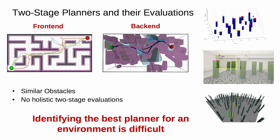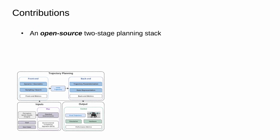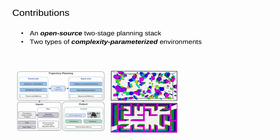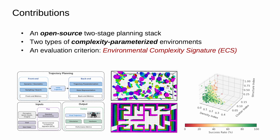To solve these problems, we believe we can evaluate planners separately for different environmental complexities and make planner recommendations accordingly. To this end, we propose an open-source two-stage planning stack to easily integrate new front-end and back-end planners, two new environments to vary environmental complexities, and an evaluation criterion called ECS that gives a unique signature to each environment and identifies the likely performance of planners.